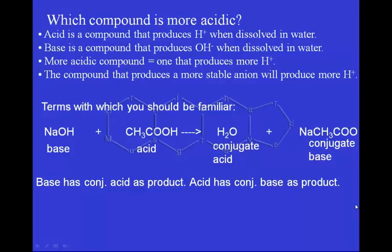This mini-lecture is about acidity. Let's define what an acid actually is. An acid is a compound that produces H+ ions when you dissolve it in water, and a base is a compound that produces OH- when we dissolve it in water. If we want to figure out the more acidic compound out of two compounds, we would choose the one that produces more H+, that would be more acidic.